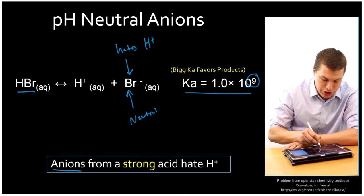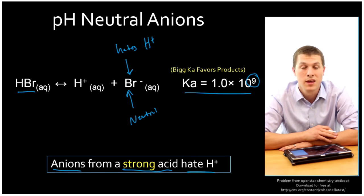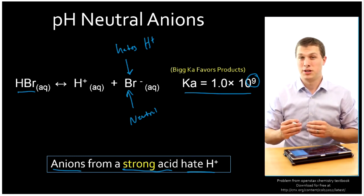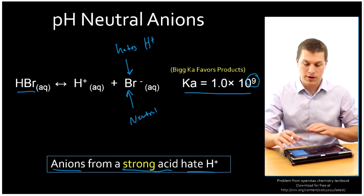So anions from a strong acid hate hydrogen ions, and that makes them neutral. Now we're going to talk about this in terms of conjugate acids and conjugate bases. So this language gets a little more technical than what we've been talking about here. Let's look at that.